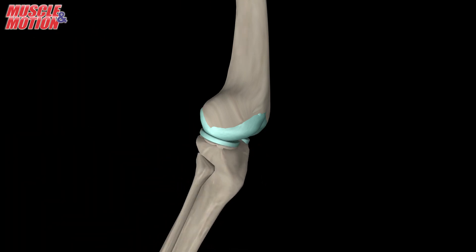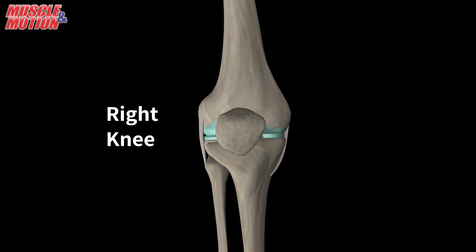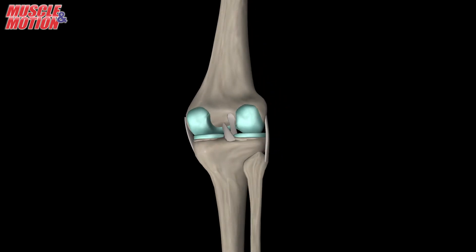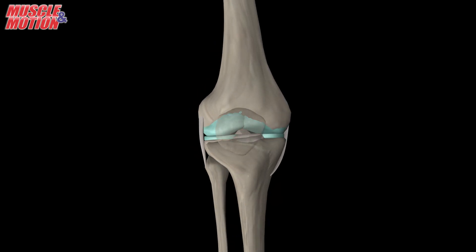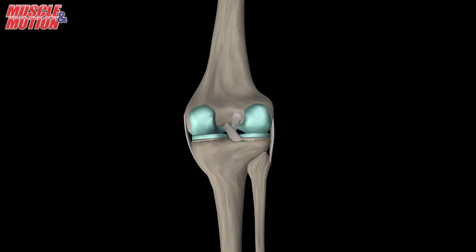The knee consists of many ligaments. Ligaments are tough bands of tissue that connect the ends of bones together. The ligaments protect the knee and provide stability. Let's take a look at the four most important ligaments. First, we have the medial collateral ligament, or MCL, and the lateral collateral ligament, or LCL, found on either side of the knee joint. The MCL and LCL prevent the knee from moving too far in the side-to-side direction.